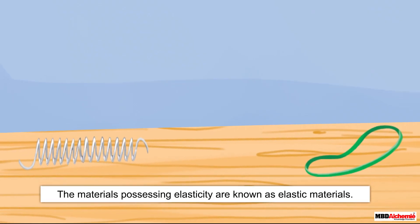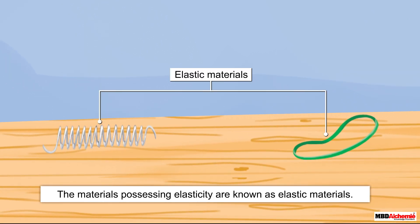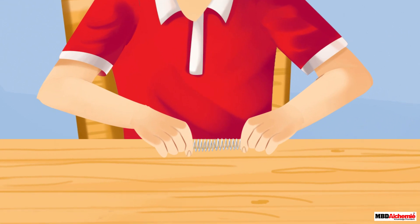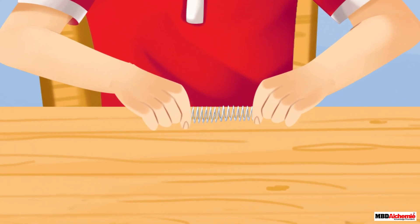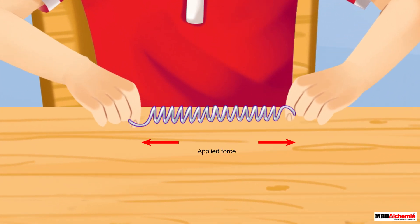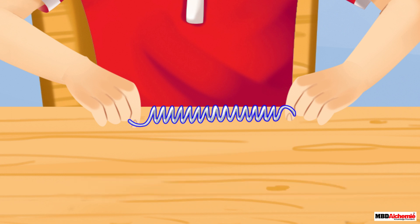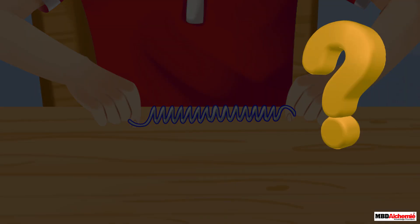The materials possessing this property are known as elastic materials. As you can see, when force is applied on an elastic solid it gets deformed. This deformation caused in elastic materials is known as elastic deformation.